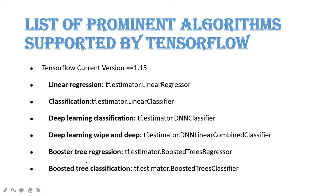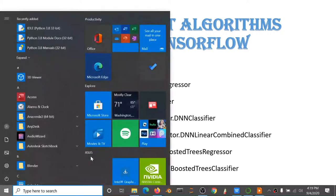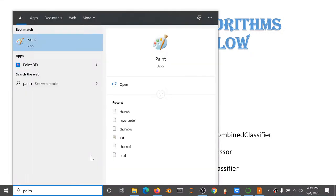The list of algorithms supported by TensorFlow: the current version of TensorFlow is 1.15. We have different types of algorithms like linear regression, classification, deep learning classification, deep learning wide data, boosted tree regression, and boosted tree classification. These are some of the TensorFlow packages we can use. I will now show you how the tensor will be represented using Paint.